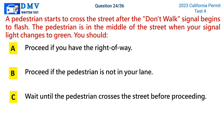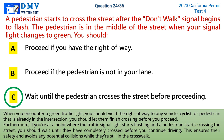Question 24: A pedestrian starts to cross the street after the 'Don't Walk' signal begins to flash. The pedestrian is in the middle of the street when your signal light changes to green. You should. A) proceed if you have the right of way, B) proceed if the pedestrian is not in your lane, C) wait until the pedestrian crosses the street before proceeding. The correct answer is C. When you encounter a green traffic light, yield the right of way to any vehicle, cyclist, or pedestrian already in the intersection. Wait until they have completely crossed before you proceed, ensuring their safety and avoiding potential collisions.